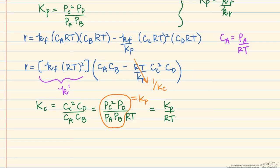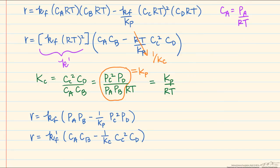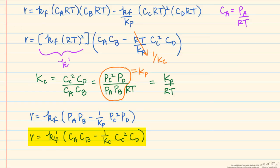We can switch between two different ways of looking at the reaction rate for this ideal gas system: the rate can be expressed in terms of partial pressures with a rate constant kf that has units of per pressure, or in terms of concentrations with a rate constant kf-prime that has units of per concentration. The two are related to each other through RT, and similarly Kp and Kc are related through RT based on the ideal gas law.